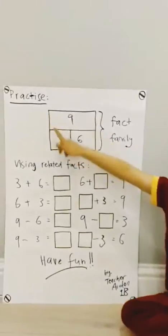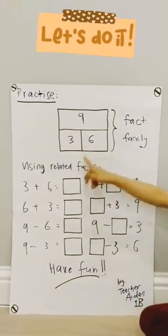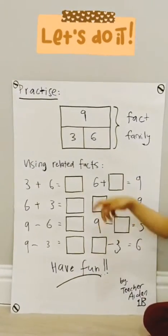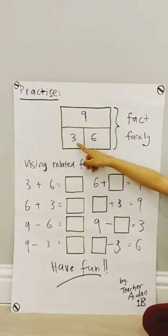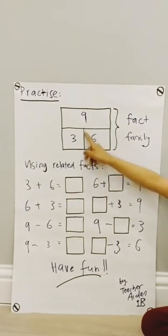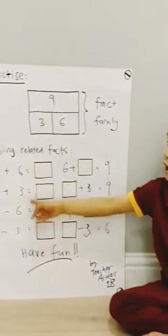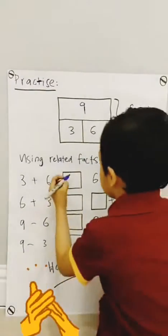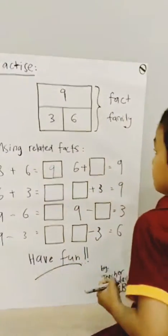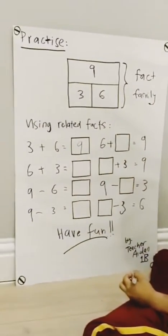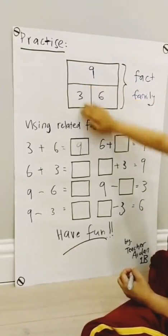Now let's practice. We're going to solve all this by using the Related Facts of 3, 6, and 9. 3 plus 6, cover that up, is 9. 6 plus 3, cover it up again, is 9.